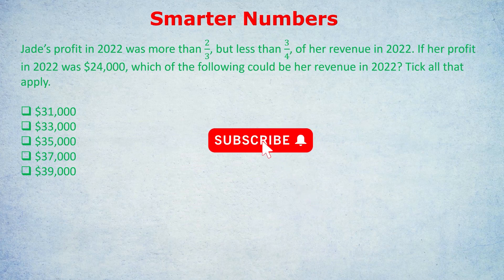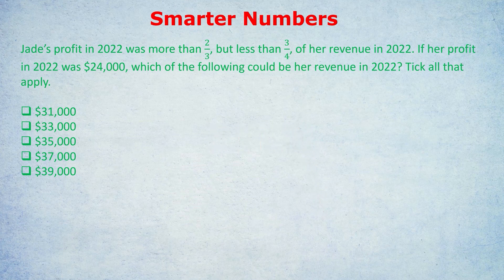As always, feel free to pause the video and try the question yourself to see if you even need the trick. But there are going to be two following questions of increasing difficulty too. Jade's profit in 2022 was more than two-thirds but less than three-quarters of her revenue in 2022. If her profit in 2022 was $24,000, which of the following could be her revenue in 2022? Tick all that apply.